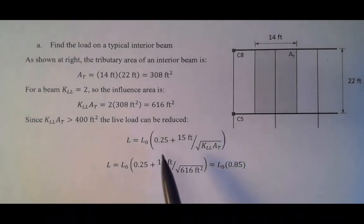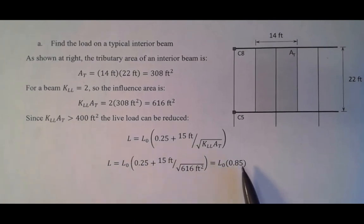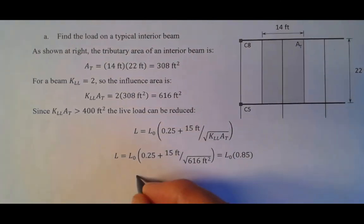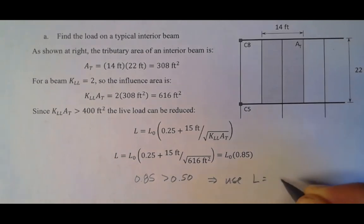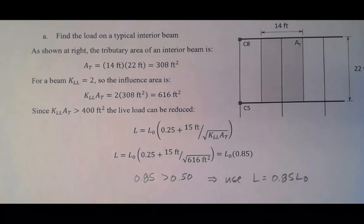So again, here's that equation from the specification, and if you look at this, what I like to do is go ahead and calculate this term here. So I plugged all the numbers in, that's 0.85, and the reason I do that is I just want to make sure I don't go lower than that lower bound. And so I'll just say, okay, so 0.85 is greater than 0.50, so we'll use L equal to 0.85 L₀. We can use that calculation.